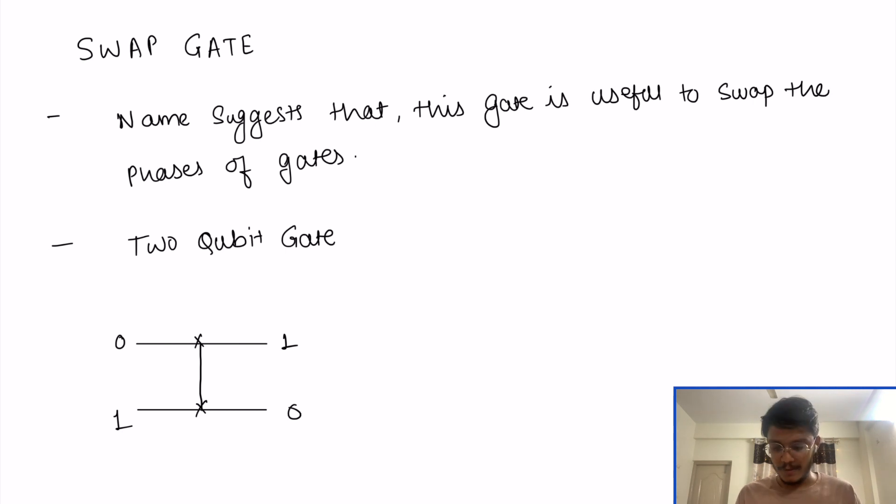So, for example, if you apply it on 0, 1 qubit state, then it will be 1, 0. That's how it is. Very simple. No rocket science, nothing.